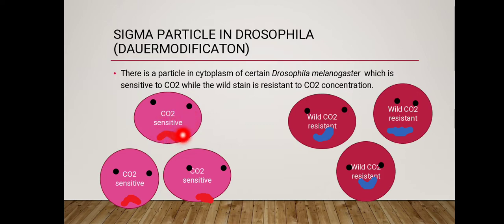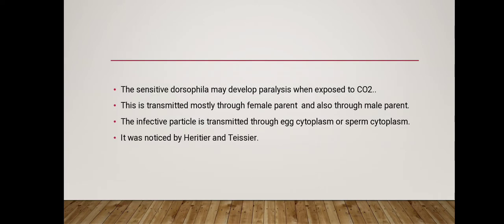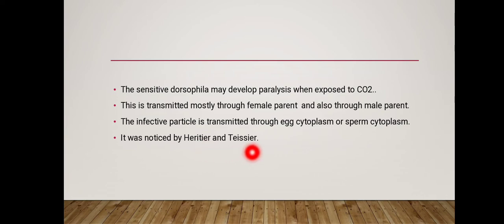It was studied that carbon dioxide sensitivity in some species or strains is due to the presence of sigma particle in their cytoplasm. It was also found that this cytoplasmic inheritance came not only from maternal origin but also from paternal origin, and the gene was present in the cytoplasm. Drosophila sensitive to carbon dioxide may develop paralysis when exposed to it, and this was noticed first by L'Héritier and Teissier.